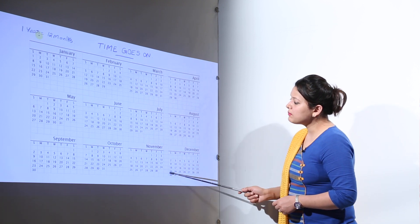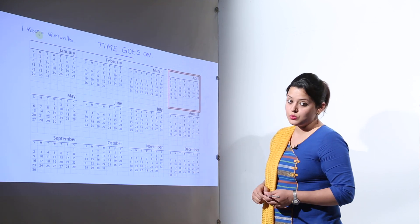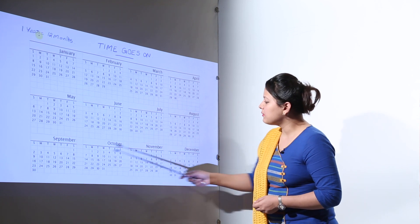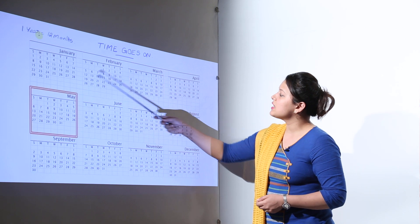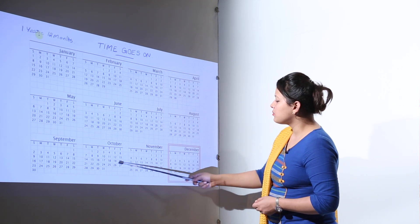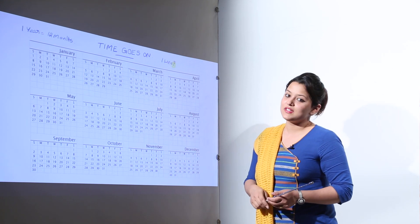Now you can see over here, there are some months that have 30 days only. And those months are April, June, September and November. There are some months that have 31 days: January, March, May, July, August, October and December. And February is the shortest month of the year every time.